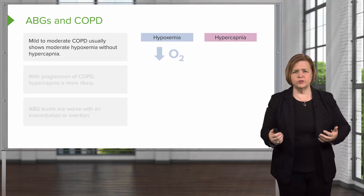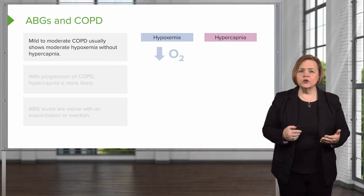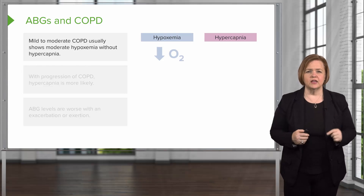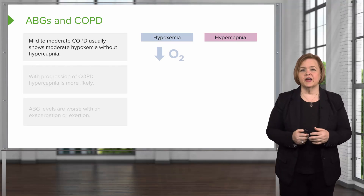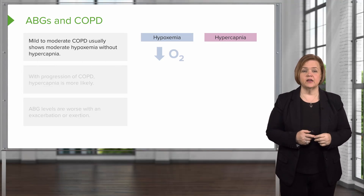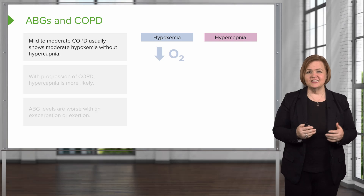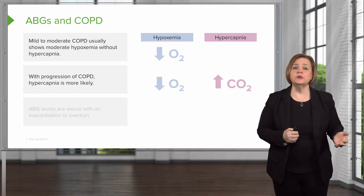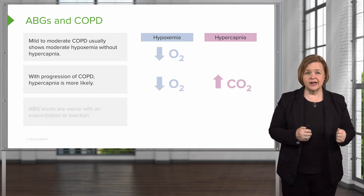Now ABGs and COPD — what would you expect? With mild to moderate COPD, you usually see moderate hypoxemia without hypercapnia. Breaking that down: hypo means low, emia means in the blood, and ox in the middle is oxygen — so low oxygen in the blood without elevated CO2. As COPD progresses, you're more likely to see an elevated CO2 level, which we call hypercapnia.